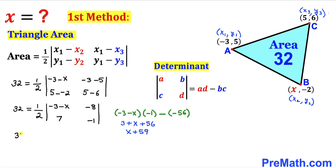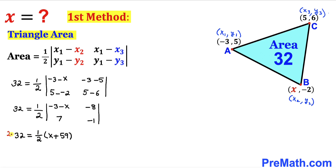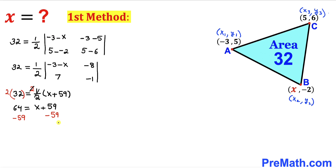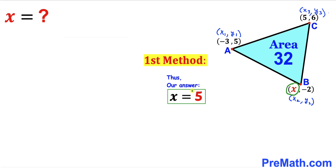So the equation becomes 32 equals one-half times x plus 59. Multiplying both sides by 2: 64 equals x plus 59. Subtracting 59 from both sides, our x value turns out to be 5. Thus x equals 5 by using this first method.